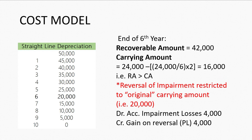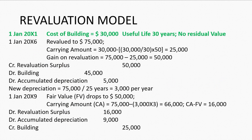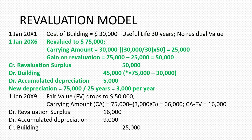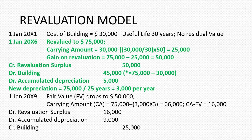Now let's look at an example on the revaluation model. On the 1st of January a building is purchased at a cost of $30,000 with a useful life of 30 years and zero residual value. Five years later the building is revalued to $75,000; since the carrying amount is $25,000, the gain on revaluation is $50,000. In the journal entries we credit revaluation surplus by $50,000, debit building by $45,000 to reflect the gain from $30,000 to $75,000, and debit accumulated depreciation by $5,000 to clear that account. The new depreciation then becomes $3,000 each year.